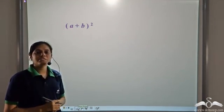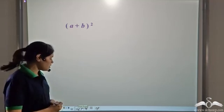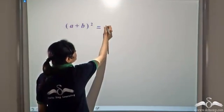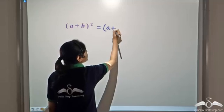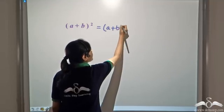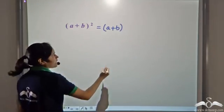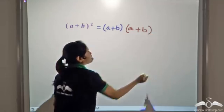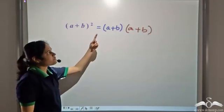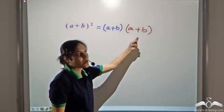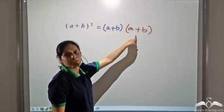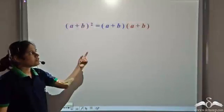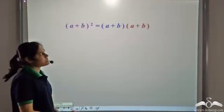We have a plus b whole square. So let us try and expand it. This is equal to a plus b into a plus b, because a plus b square stands for a plus b multiplied twice. So a plus b into a plus b. Now let us use the distributive property.